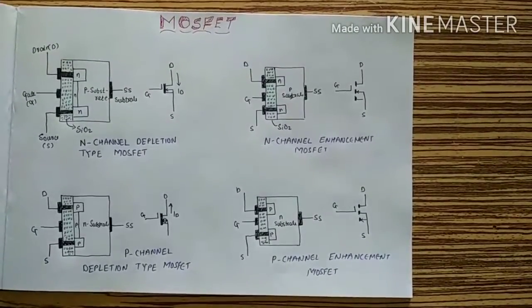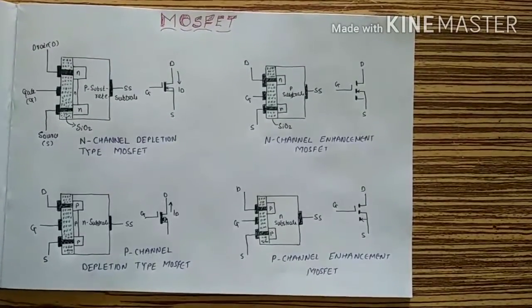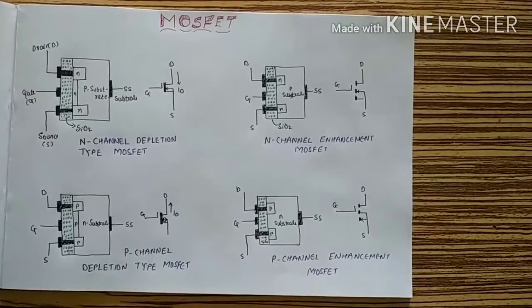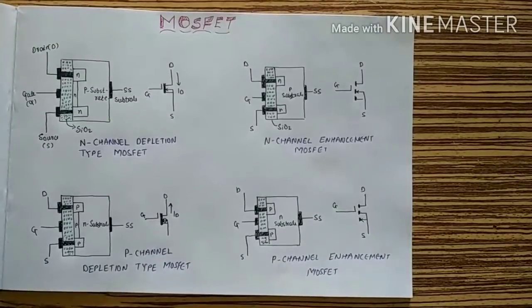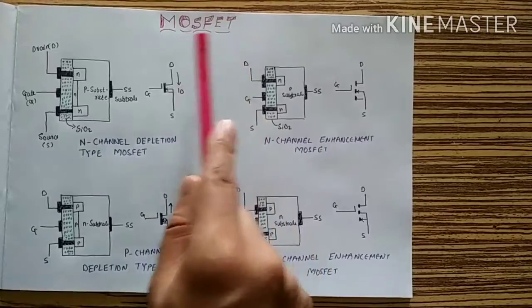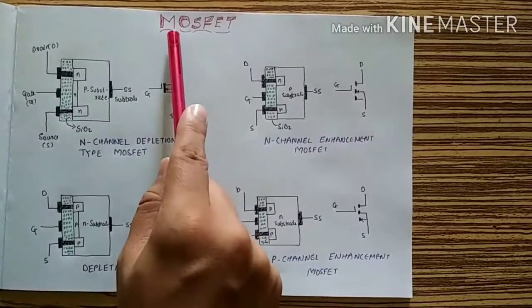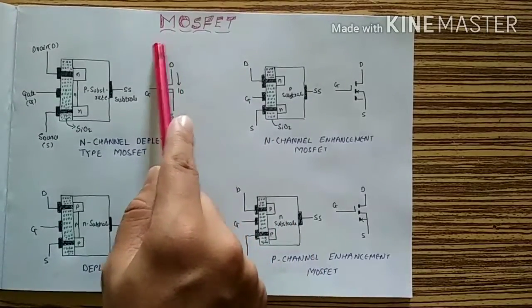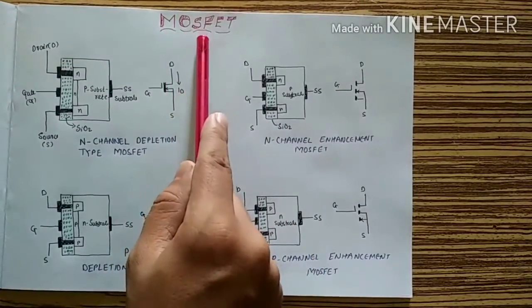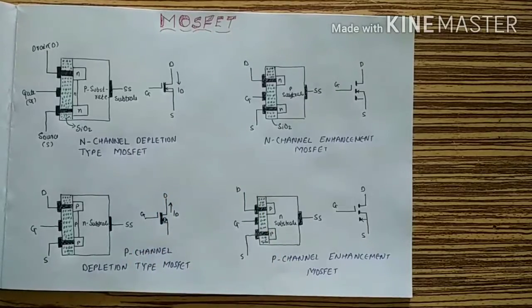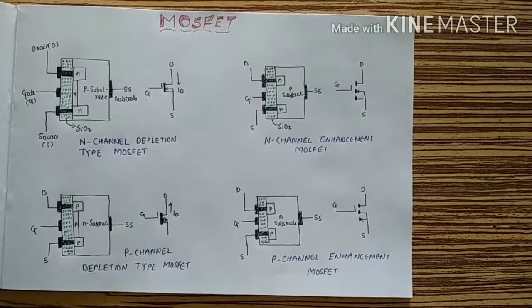Today we will see about the MOSFET. The full form of MOSFET is Metal Oxide Semiconductor Field Effect Transistor.